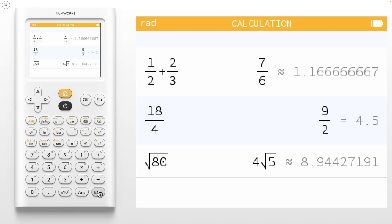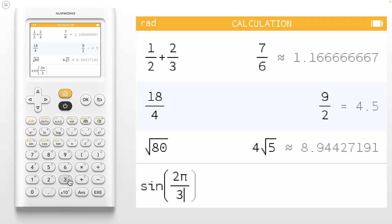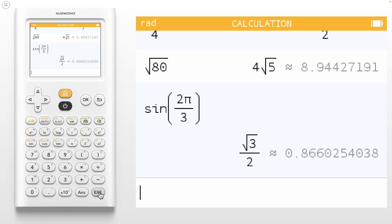We see the exact simplest radical form 4 square root 5 and the decimal approximation. This also works with trig expressions. Let's evaluate sine of 2 pi over 3. Notice that we are in radian mode as indicated by the rad in the top left corner. If needed, you can change to degree mode in the settings application. Once again, we are provided with the exact and decimal approximation.